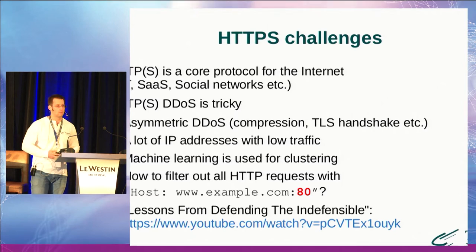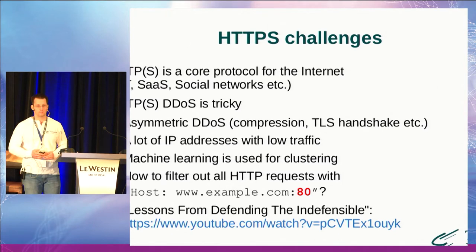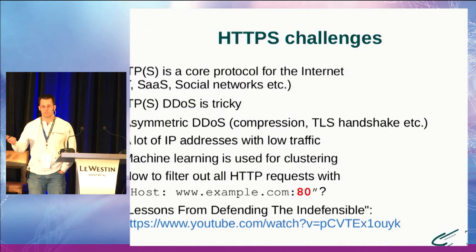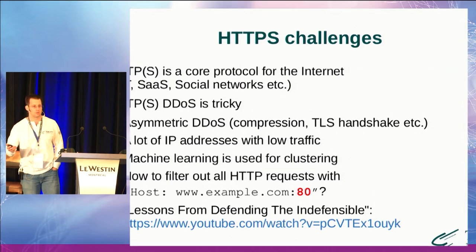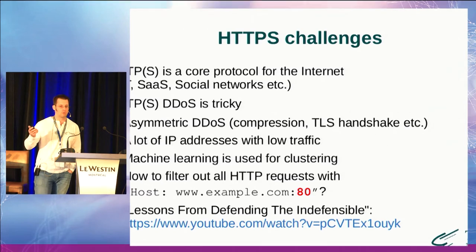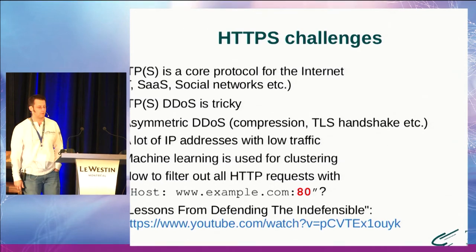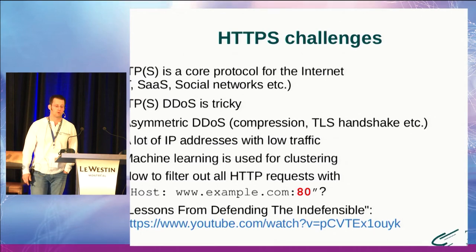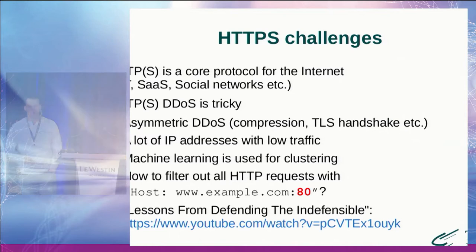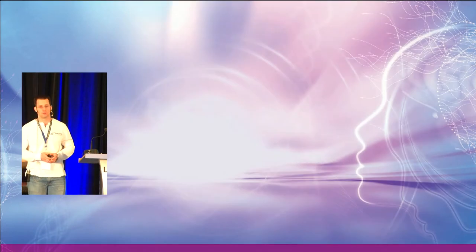HTTPS is widespread in the modern internet. Every device uses HTTPS to browse the internet. We have the Internet of Things, a lot of social networks, Gmail, and so on — it's a very widespread protocol, just like TCP. However, these complex DDoS attacks at the application layer are tricky to fight against. The first problem is that such attacks are sometimes asymmetric — it means the attacker spends much less resources than the victim.